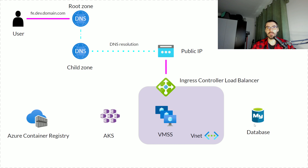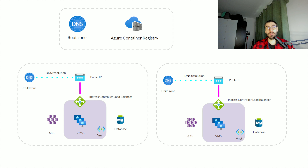Everything you see right here has been created through a manual process. Now the purpose is to automate all of that and make it repeatable and reusable. If we want to have two environments — dev and QA — this is how everything is going to look inside our subscription: we will have the set of global resources — the root DNS zone and the Azure Container Registry — and then a blueprint of resources that we can redeploy multiple times through infrastructure as code in an effortless manner. That's exactly what we're trying to achieve.